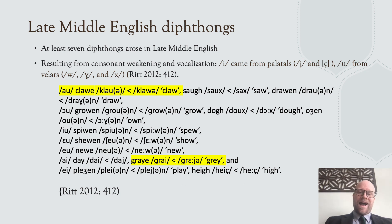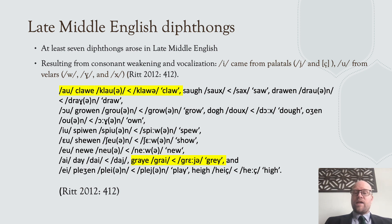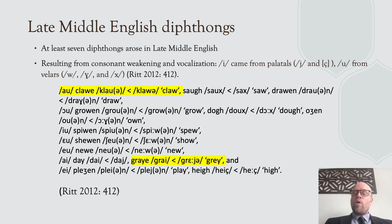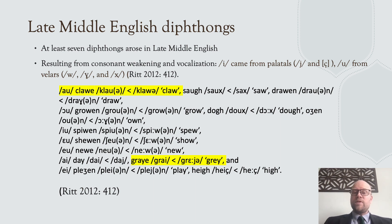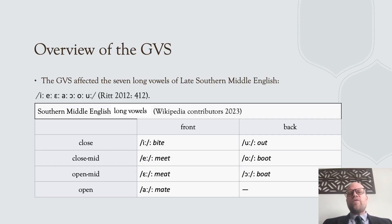We also have a diphthong that has carried through to today but is now pronounced differently. The word 'gray': in Middle English it was 'gray', which shifted to 'gray', and now it is 'gray'. That's an example of a diphthong that we've continued but now pronounce differently due to the great vowel shift.